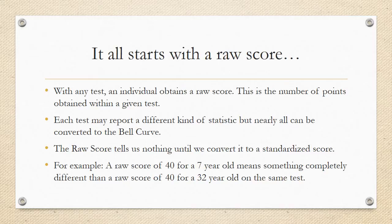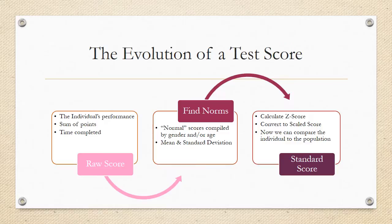It all begins with a raw score. With any test that we have, the individual obtains a raw score. This is the number of points obtained within a given test. Each test may report a different kind of statistic, but nearly all can be converted to the bell curve, meaning they can be standardized. The raw score tells us nothing until we convert it to a standardized score. For example, a raw score of 40 for a 7-year-old means something completely different than a raw score of 40 for a 32-year-old on the same test.